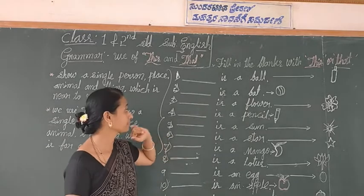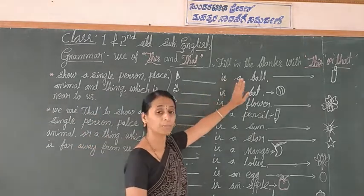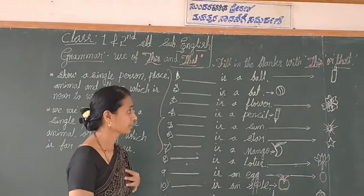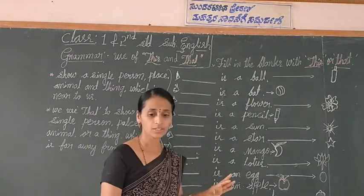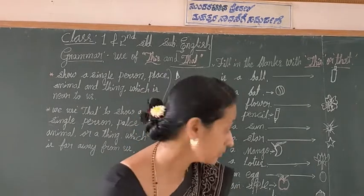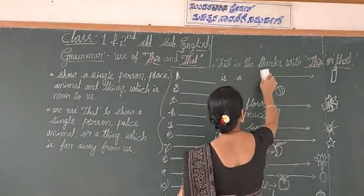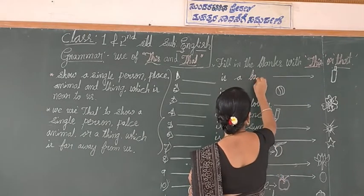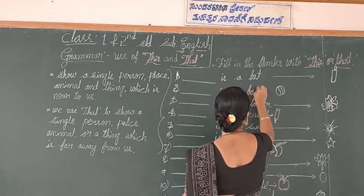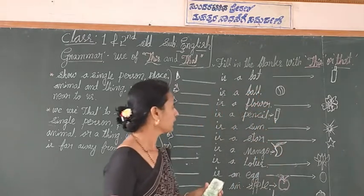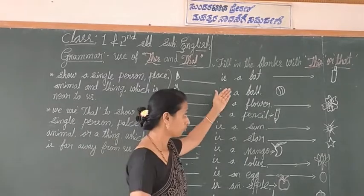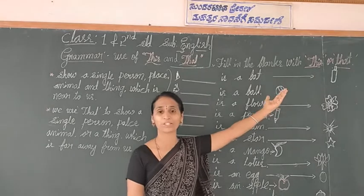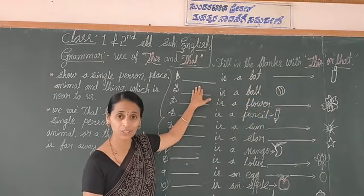Tell me: dash is a bag. Is the bag near to me or far away from us? Yes, far away from us. So we can use 'that'. That is a bag.